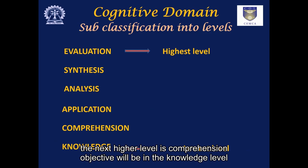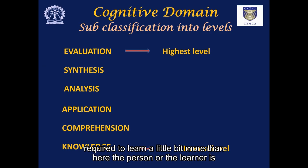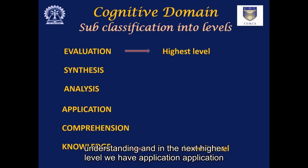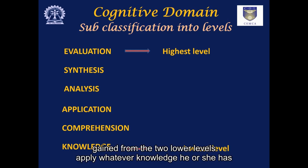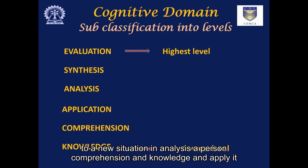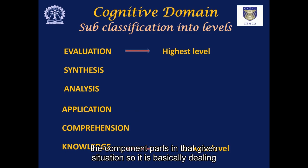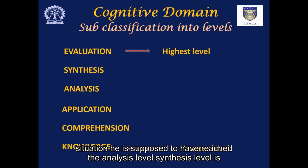The next higher level is comprehension. Here the learner is required to learn a little bit more than blind memorization — he or she needs to have a better understanding, a better grasp of the material. In the next higher level, we have application. Application usually means that the person is able to apply whatever knowledge he or she has gained from the two lower levels — comprehension and knowledge — and apply it to a new situation. In analysis, a person is required to take apart any given situation or problem into its component parts. When a learner is able to take apart the given components in a situation, he is supposed to have reached the analysis level.